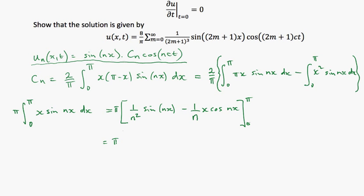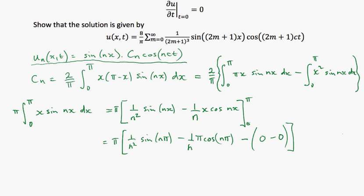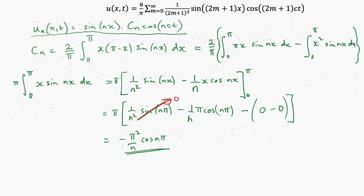Putting in the limits: at x = π I get (1/n²)·sin(nπ) minus (1/n)·π·cos(nπ), and then minus the x = 0 terms — sin(0) is zero, and x = 0 gives zero as well. Since sin(nπ) = 0, the only surviving term is -(π²/n)·cos(nπ).